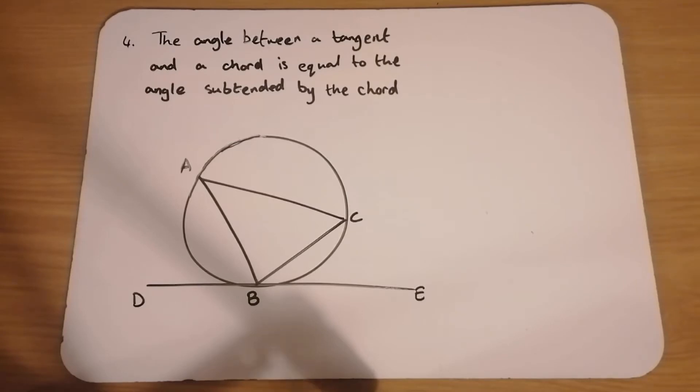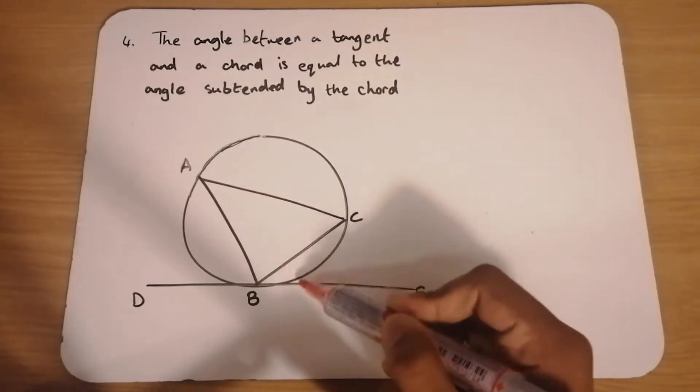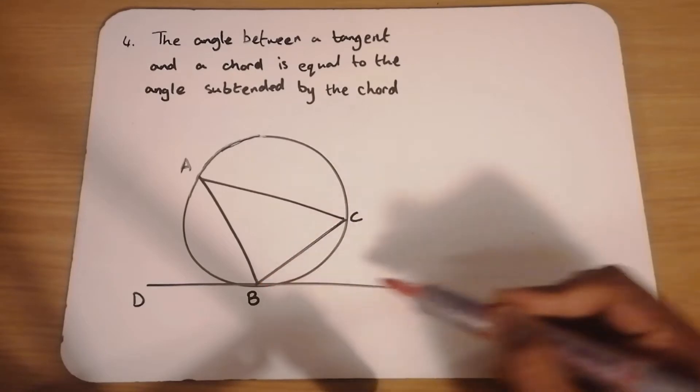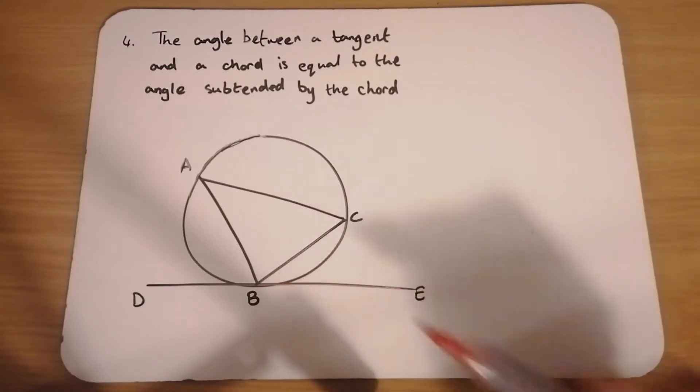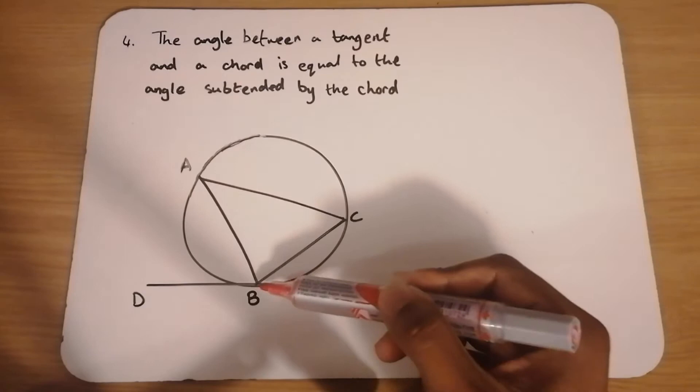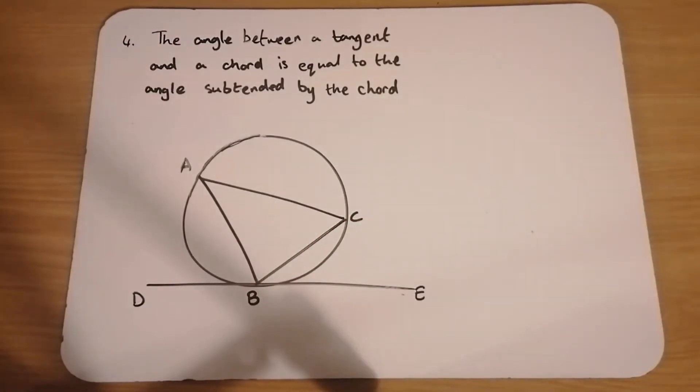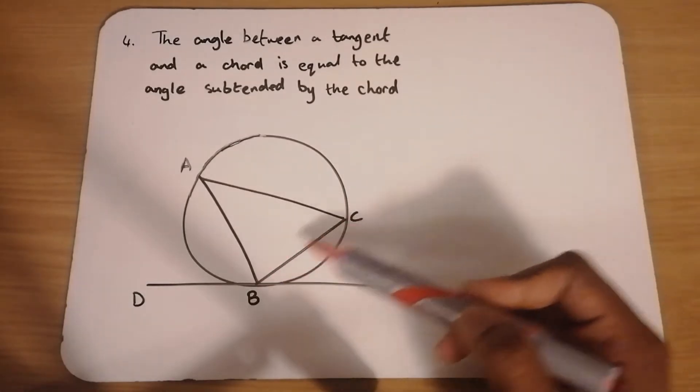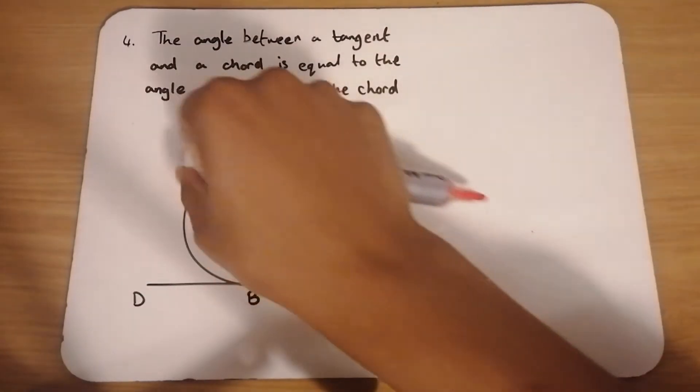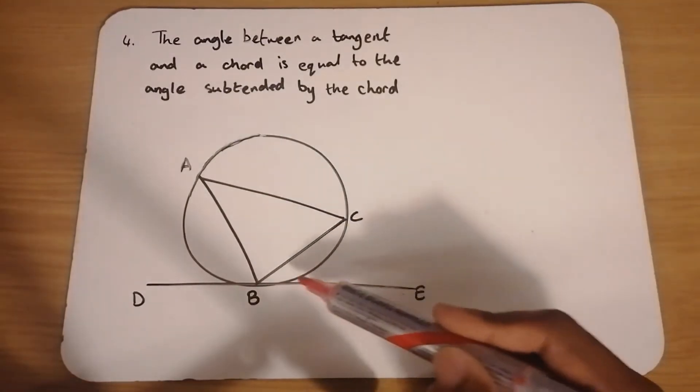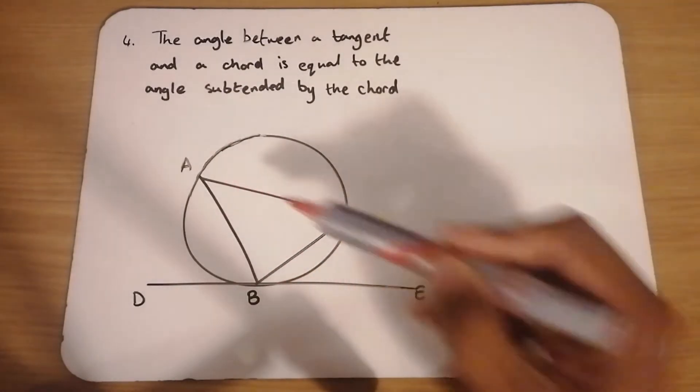So they're referring to this angle over here, CBE, this angle, and it's formed between a tangent and a chord, and it's equal to the angle that is subtended by the chord. So this chord BC subtends the angle A. Okay, so we want to show that this angle is equal to angle A.